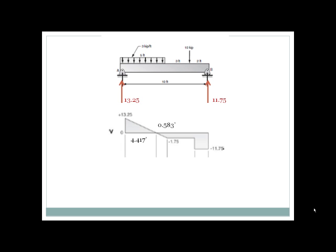So what we'll do is we will take the thirteen point two five kips and divide it by the three kip per foot intensity of the uniform load. That gives us four point four one seven feet. The other little triangle that exists below the zero line is actually the remainder of that five foot section, so it would be five feet minus four point four one seven feet. So that little portion is point five eight three.